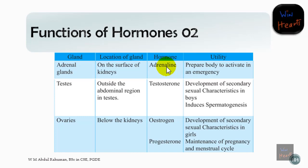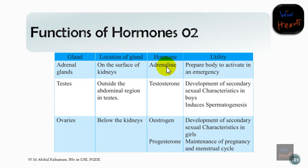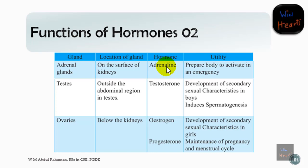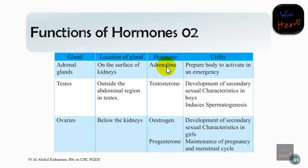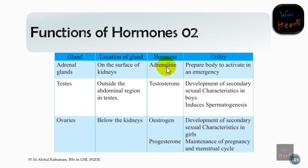The testes and ovaries produce sex hormones. Testosterone, estrogen, and progesterone are important during sexual reproduction and for developing secondary sexual characteristics in humans.